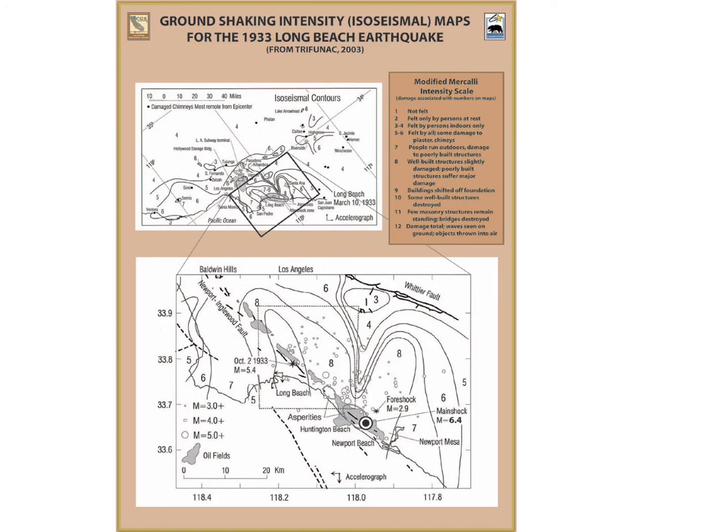This California geological survey map demonstrates the intensity of ground shaking experienced in local areas as a result of the March 10, 1933 earthquake. The intensity differed along a scale of 1 to 12, with 12 resulting in an assessment of total damage, waves seen off the ground, and objects thrown into the air.